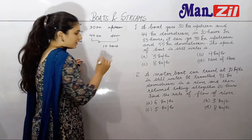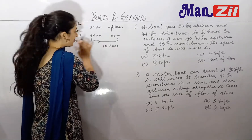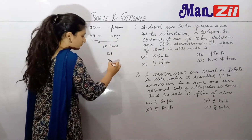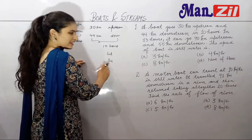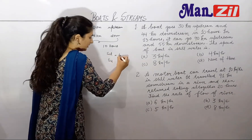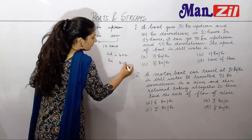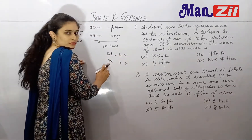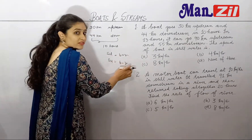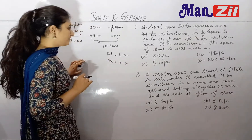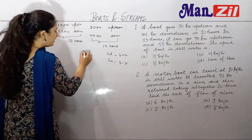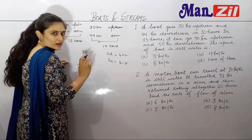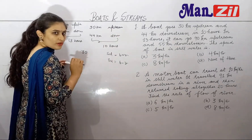Now let's look at this equation. Speed downstream and speed upstream — we will write SD and SU — which we can represent as A and B. Our speed downstream is boat speed plus river speed, and our speed upstream is boat speed minus river speed. When we travel 30 km upstream, time is distance upon speed.